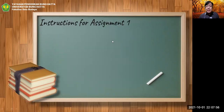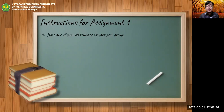Now let's go over the instructions for Assignment One. First: have one of your classmates as your peer group — choose one partner for the whole semester if possible.